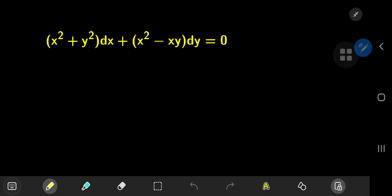Time to chill out using a differential equation. And here we have x squared plus y squared all times dx plus x squared minus xy all times dy equal to zero.